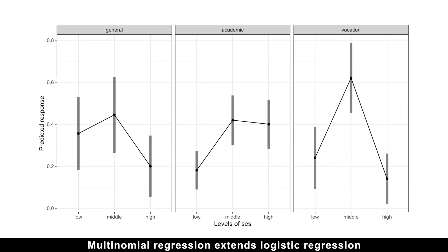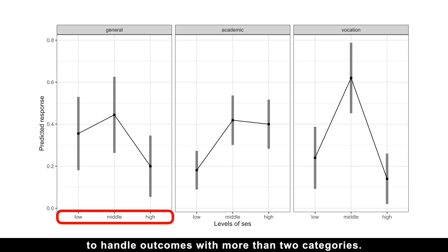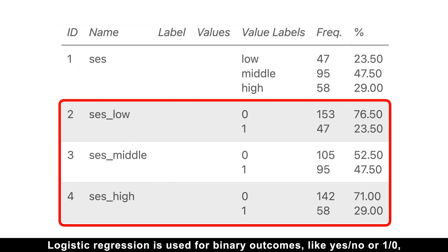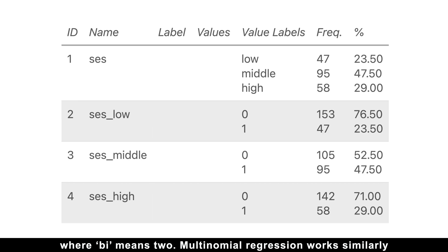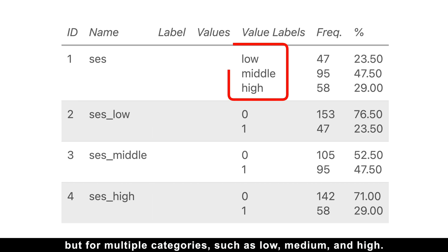Multinomial regression extends logistic regression to handle outcomes with more than two categories. Logistic regression is used for binary outcomes like yes/no or one and zero, where binary means two. Multinomial regression works similarly but for multiple categories such as low, medium, and high.